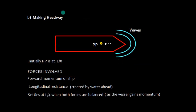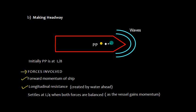As the vessel starts making headway, the bow is going to strike the waves. There are two forces involved: the forward momentum of the ship as it moves forward, and also longitudinal resistance created by water ahead. So the pivot point is somewhere around L by 8, and as both forces balance, it settles at L by 4 from forward.